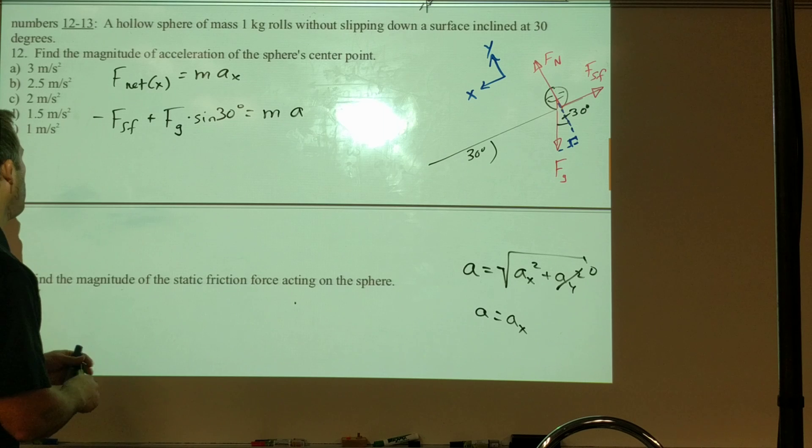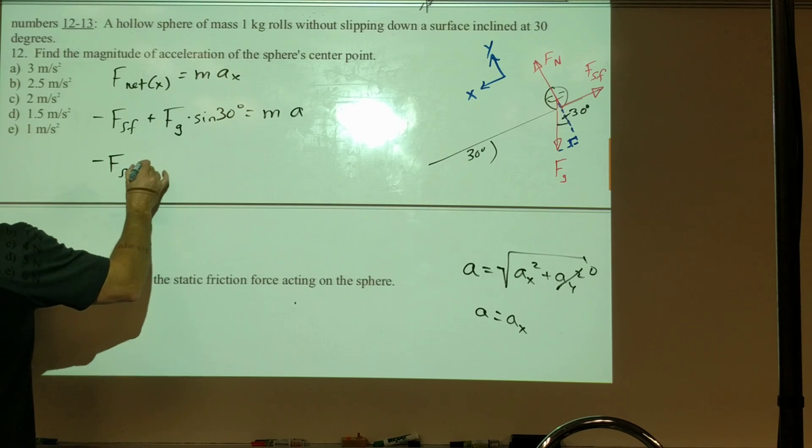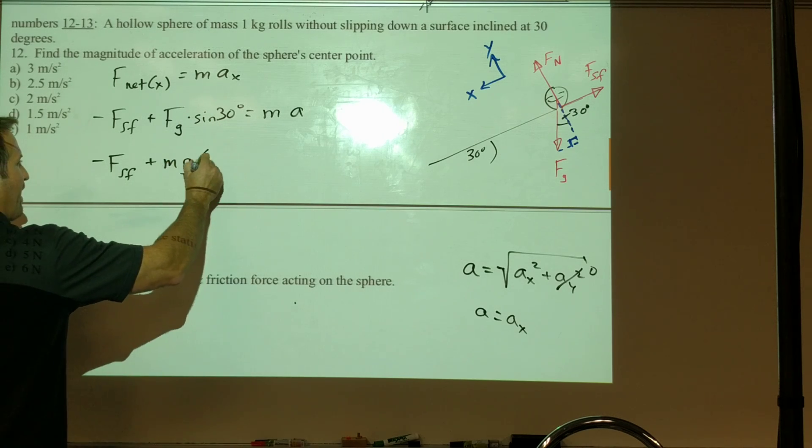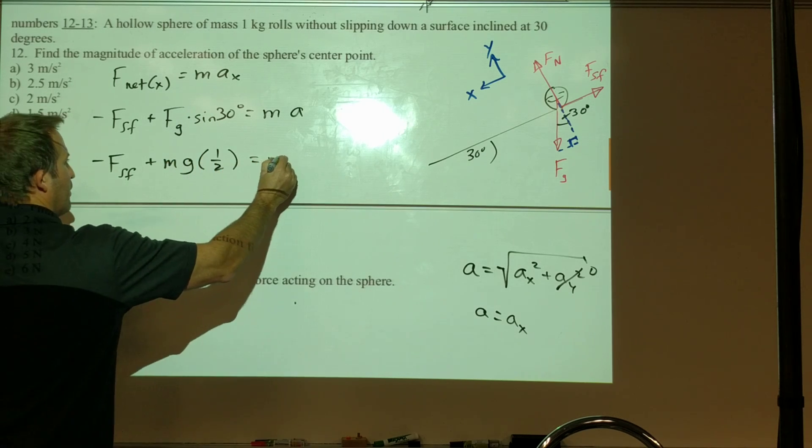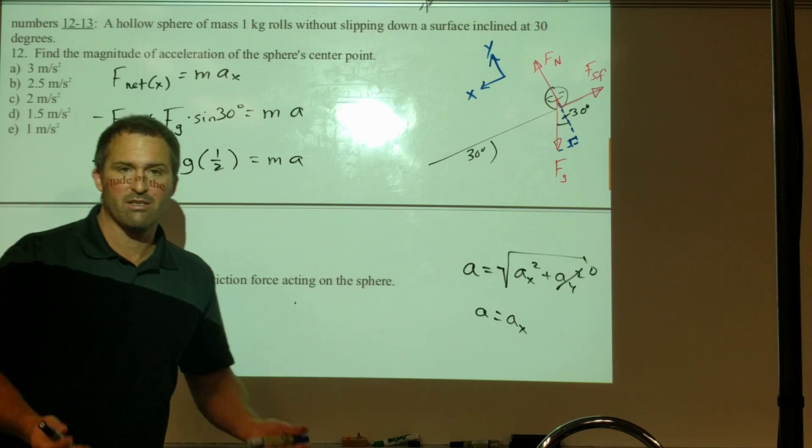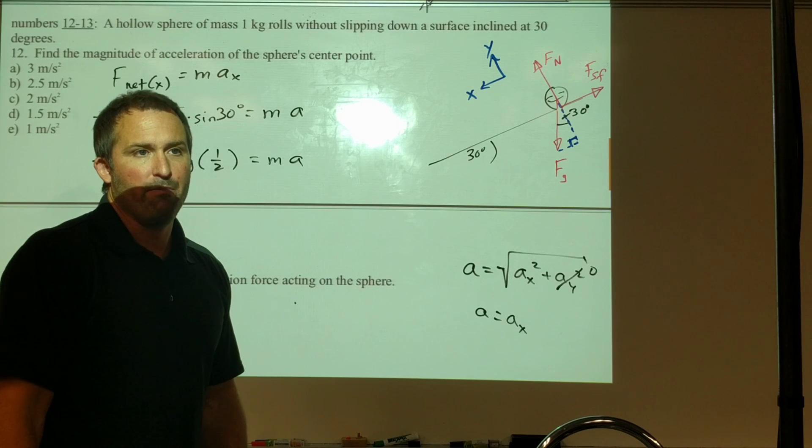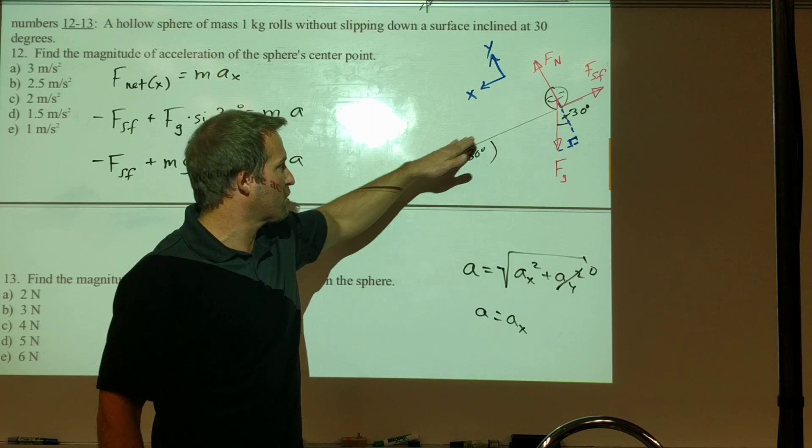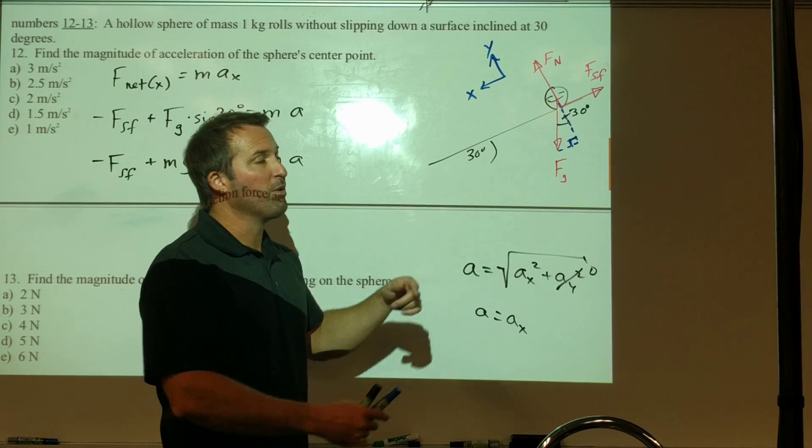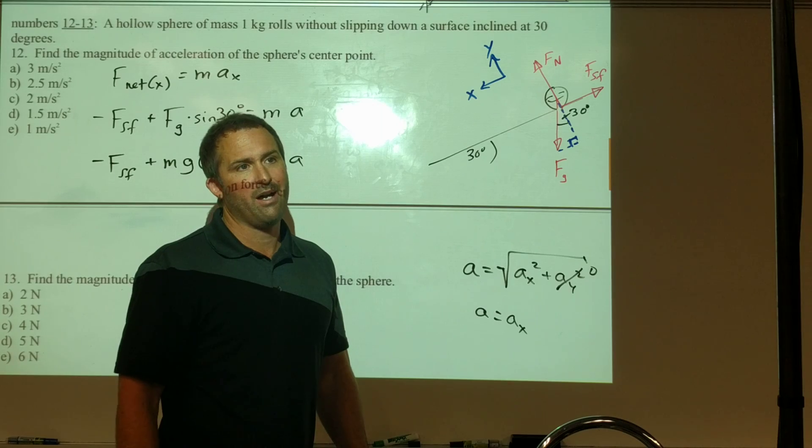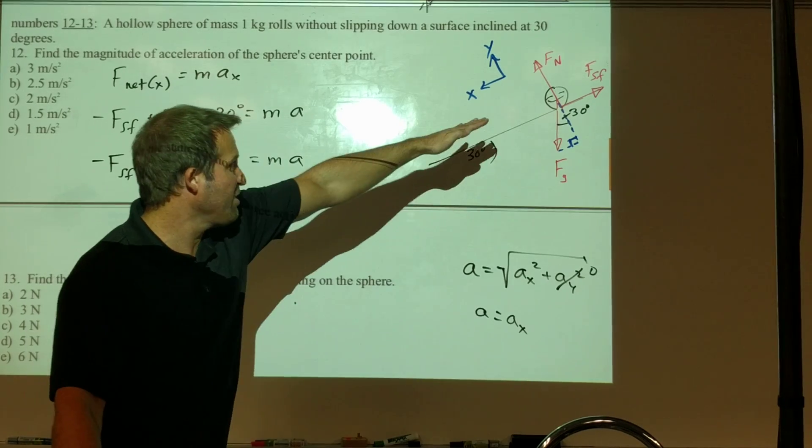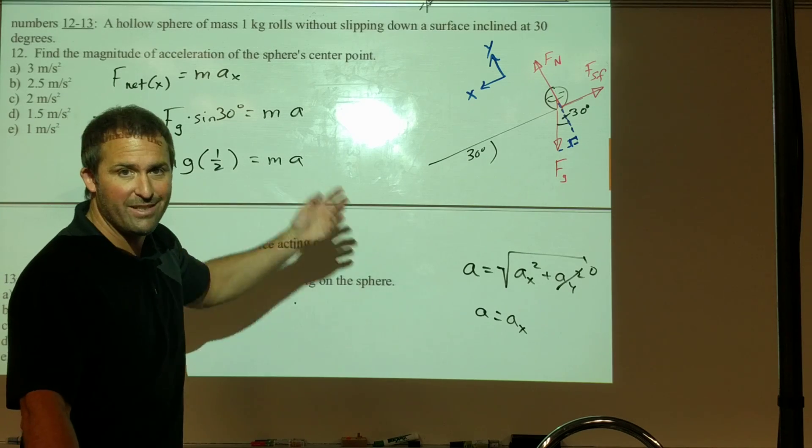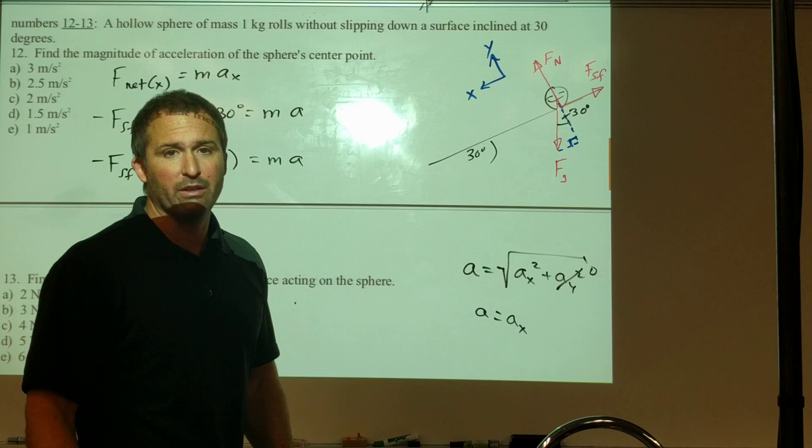We can do one more simplification and write that as mg times sine 30. That's about as far as we can go with just this equation. Let's take a moment to think about this. We've got both translational motion and rotational motion going on. We study the translational motion in more detail by using Newton's second law, and we're going to need to use the equivalent for rotation, the second law for rotation.